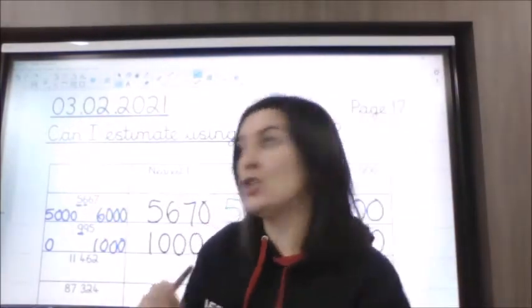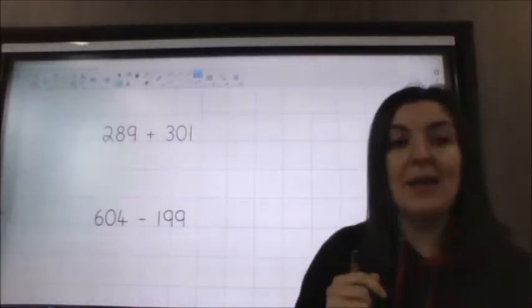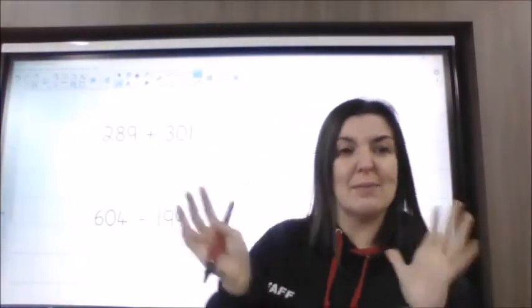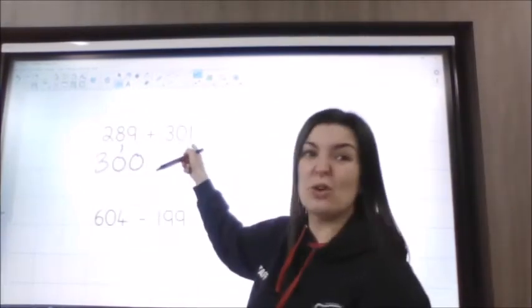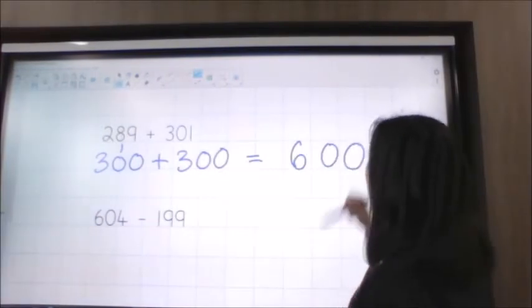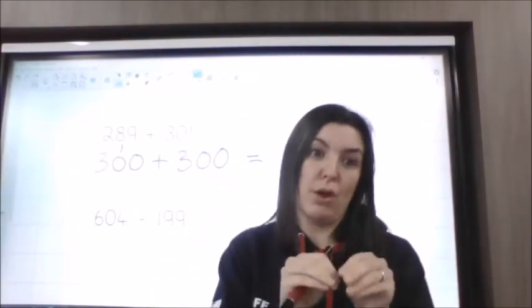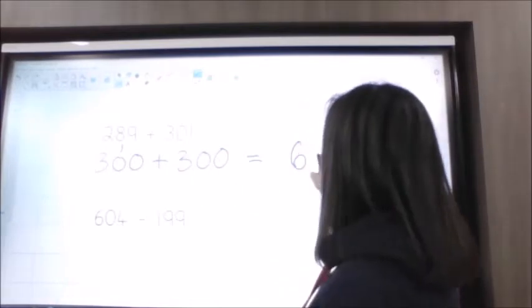The second section is using estimating to quickly work some questions out. I'm going to go through a couple of examples with you. We've got 289 add 301 and you've got to estimate what the answer would be. Because 289 is nearly 300, and 301 is really close to 300 as well, I would do 300 add 300. So my estimate — remember an estimate is a bit like a guess, but a more educated guess — would be 600.